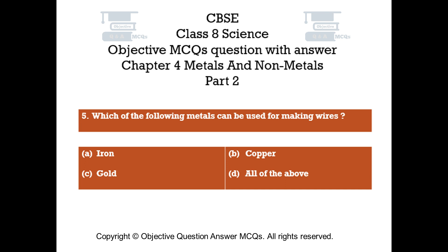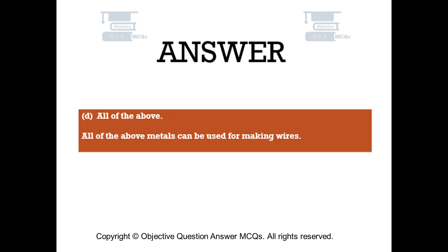Question number 5: Which of the following metals can be used for making wires? Option A: Iron. Option B: Copper. Option C: Gold. Option D: All of the above. The right answer is Option D — All of the above. All of the above metals can be used for making wires.